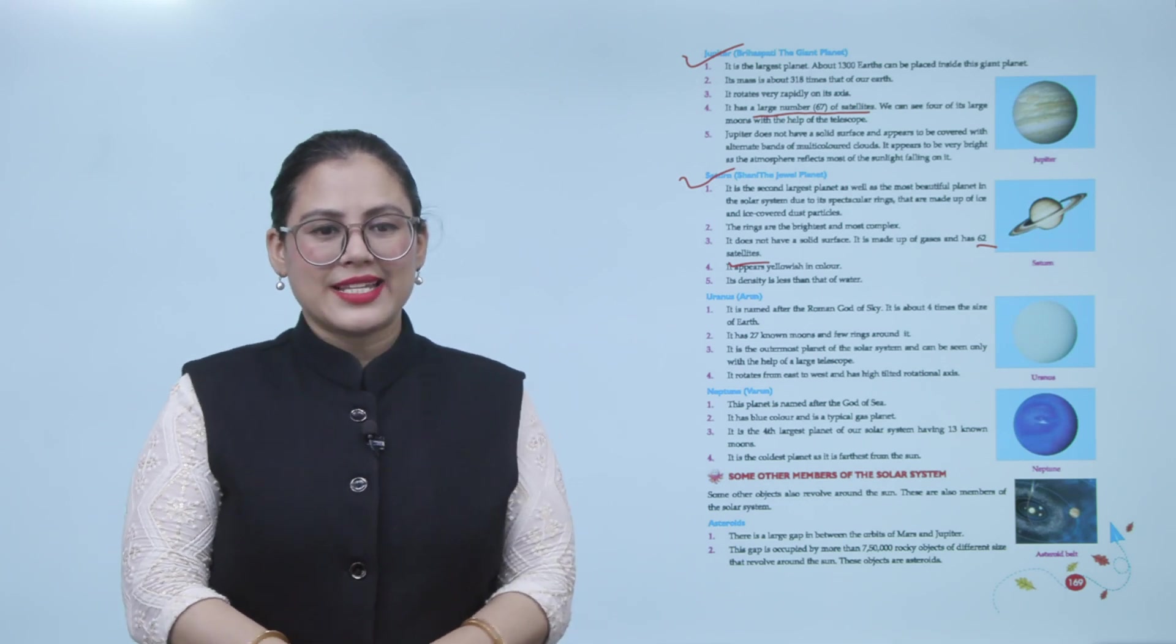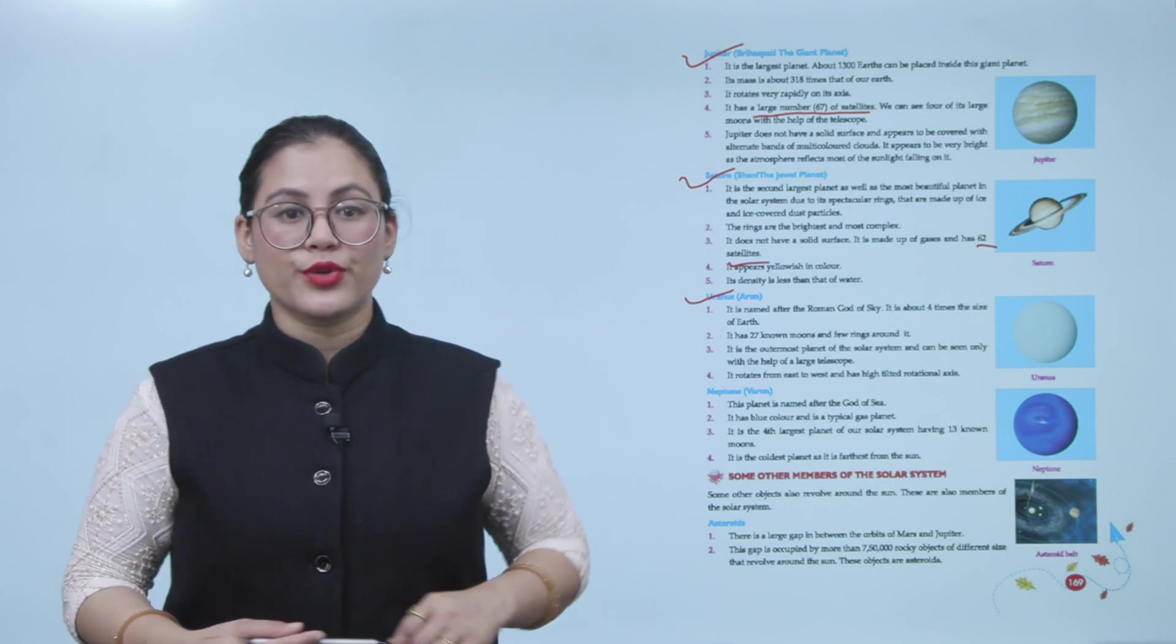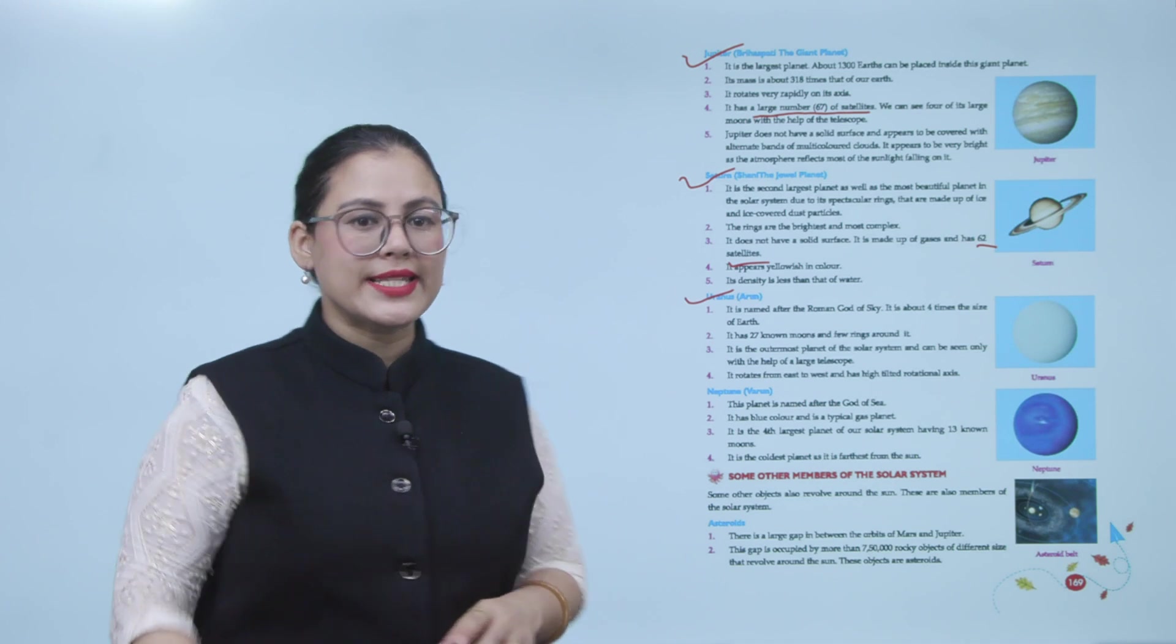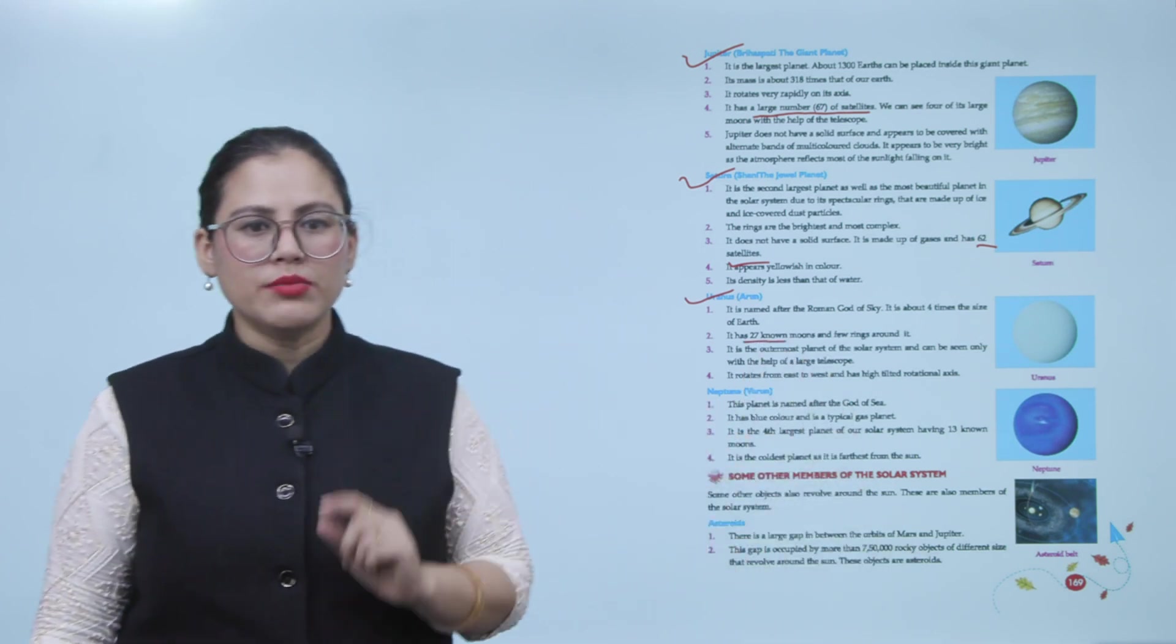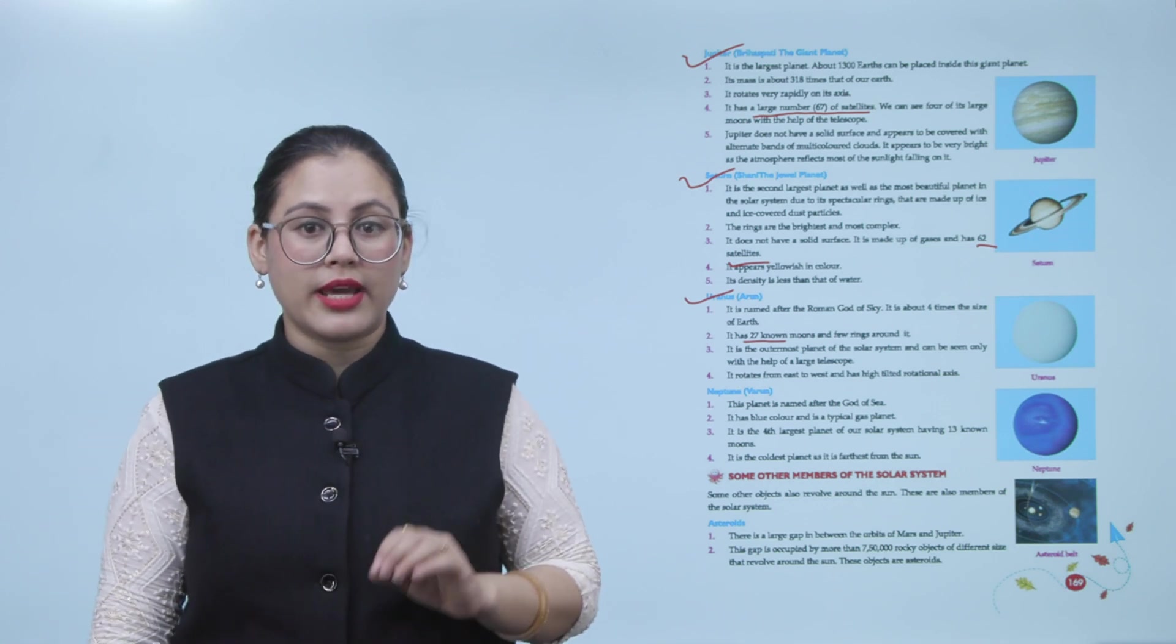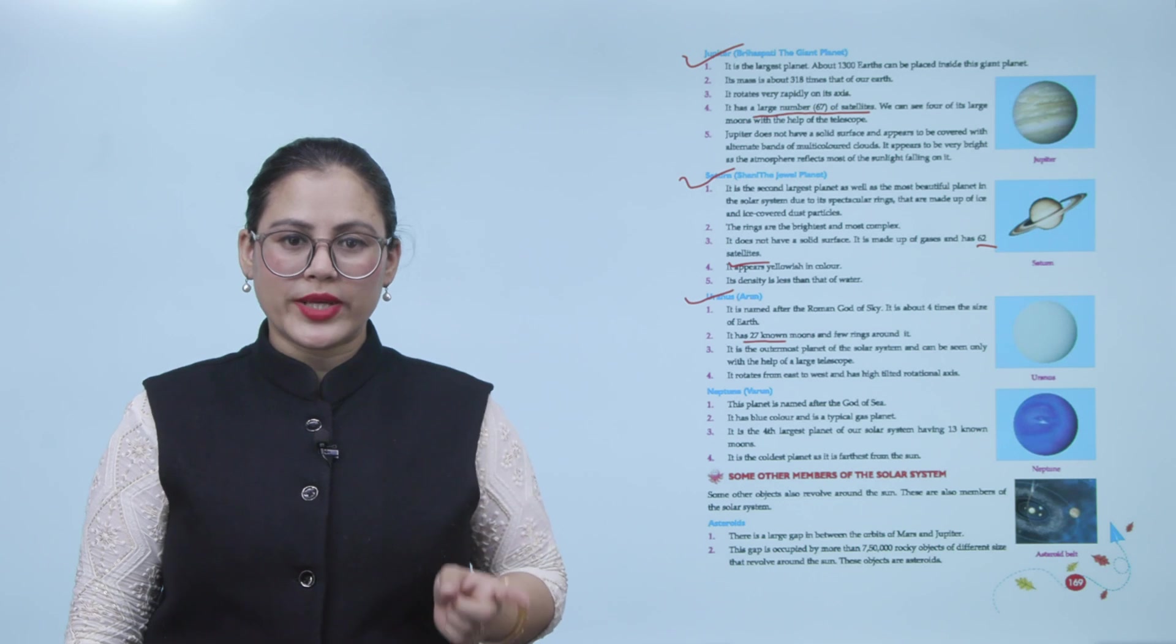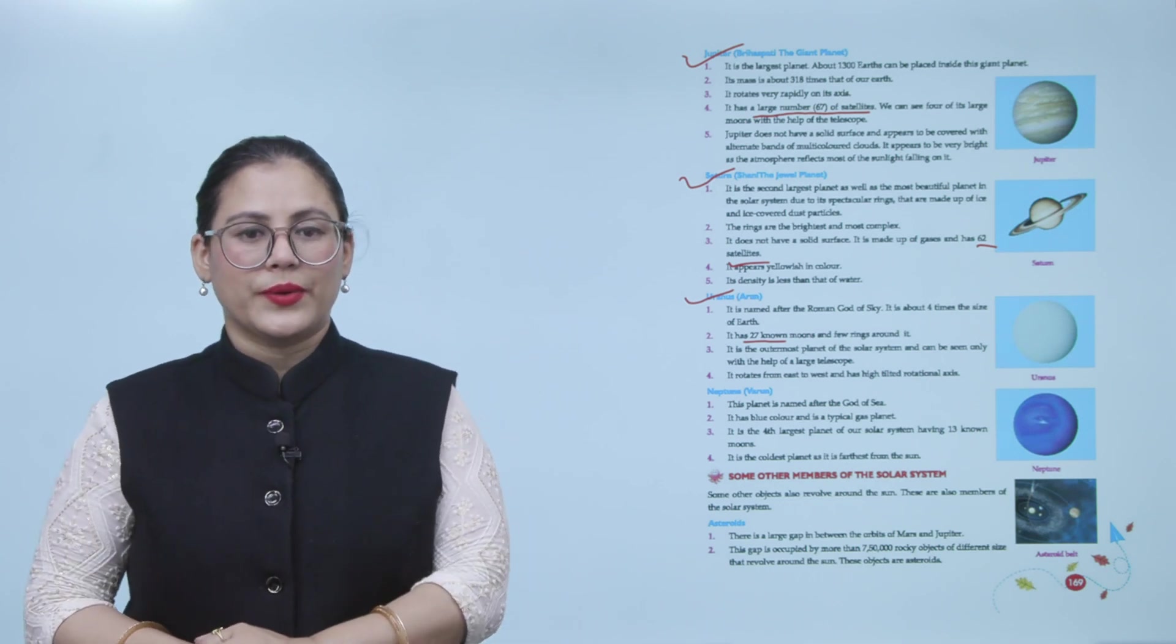Next is Uranus, or Arun. It is named after the Roman god of sky. It is about four times the size of Earth. It has 27 moons and few rings around it. It is the outermost planet of the solar system and can be seen only with the help of a large telescope. It rotates from east to west in highly tilted rotational axis.